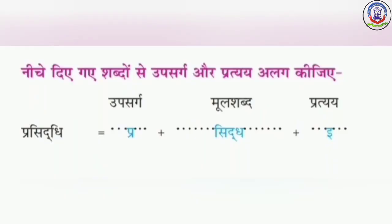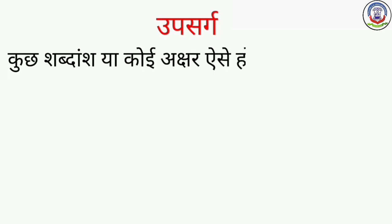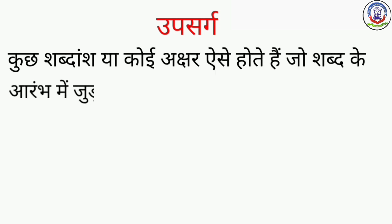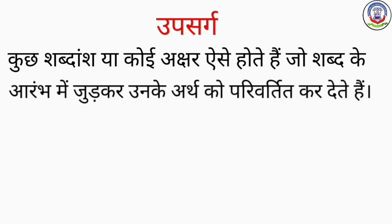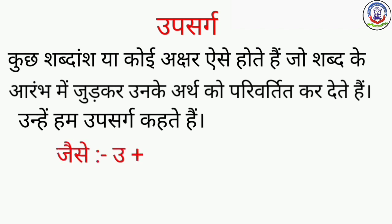Niche diye gaye shabdon se upsarg aur pratyay alag kijiye. Toh bachon, upsarg aur pratyay alag karne se pehle hum upsarg ke baare mein padhenge. Kuch shabdansh ya koi akshar aise hote hain jo shabd ke aarambh mein judkar unke arth ko parivartit kar dete hain — unhen hum upsarg kehte hain. Jaise: U + sthit = Upasthit. Upsarg hamesha shabd ke aarambh mein judte hain.